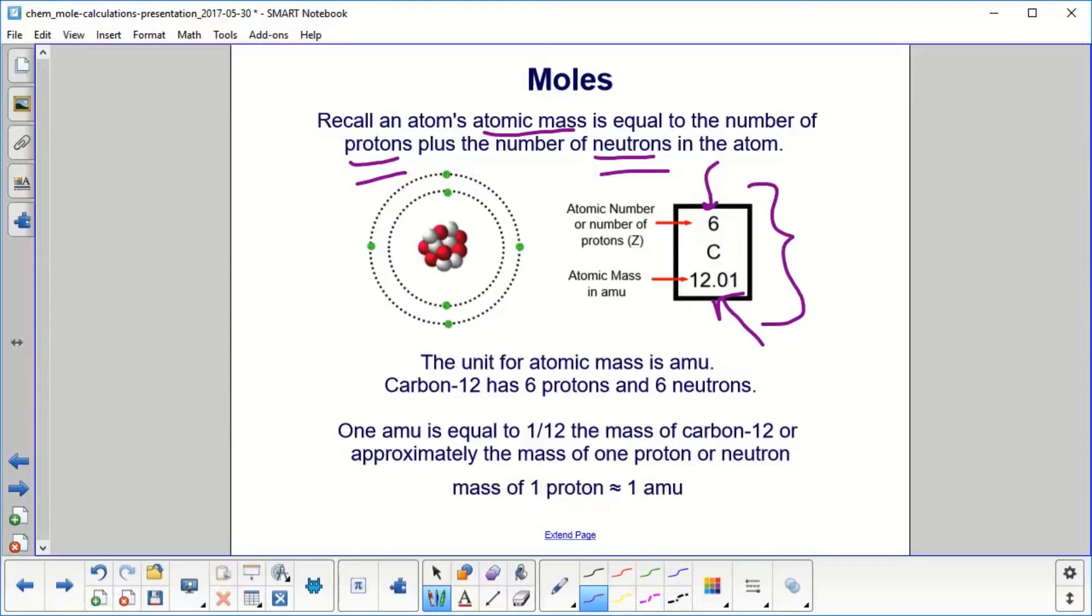Carbon-12 has six protons and six neutrons. One atomic mass unit, abbreviated AMU, is equal to one twelfth the mass of carbon-12 or approximately the mass of one proton or neutron.